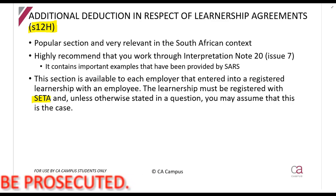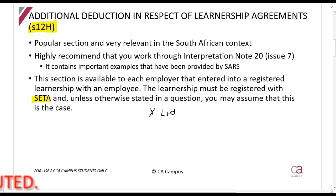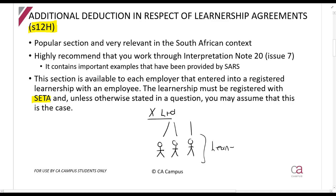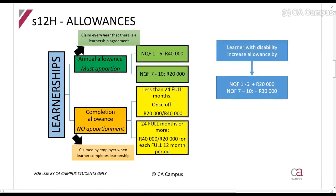Basically, the idea is to encourage employers. So if X Limited has people working for it and these people are on learnerships, you can claim their salaries and wages as a deduction, plus you get an additional learnership allowance under section 12H for these employees. This is something which a lot of big companies — and smaller ones too — take a lot of advantage of.